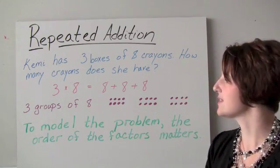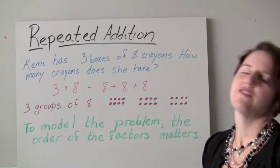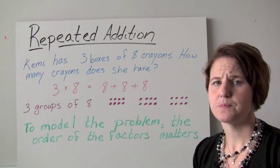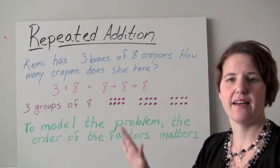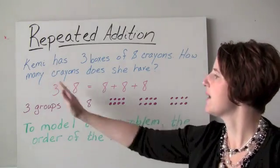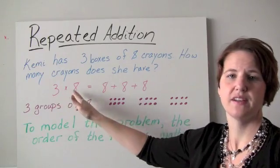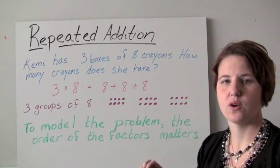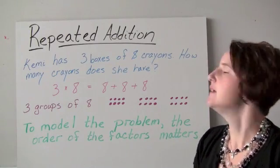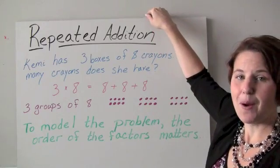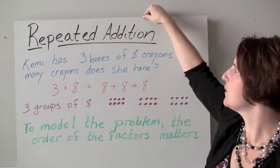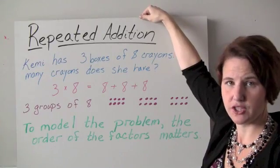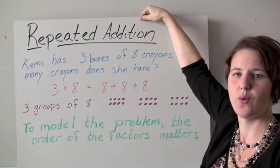We can see that there's a total of 24 dots, so three times eight equals 24 — that's the total number of crayons. For this model, the order of the factors is important because we are reading left to right: we're talking about how many groups of a certain size. We do care about the order we write the product, even though we'll later discuss a property where order doesn't matter.